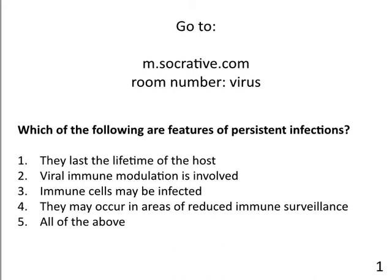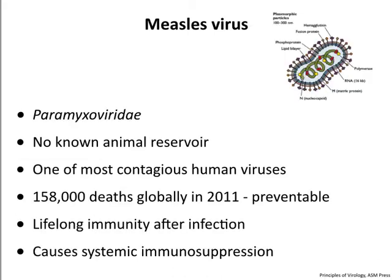Which of the following are features of persistent infections? The answer is all of the above: they last a lifetime, involve viral immune modulation, immune cells can be infected, and they occur in areas of reduced immune surveillance. Now let's talk about specific examples, starting with measles.